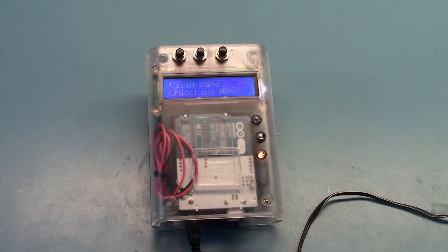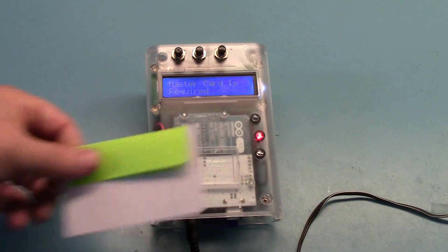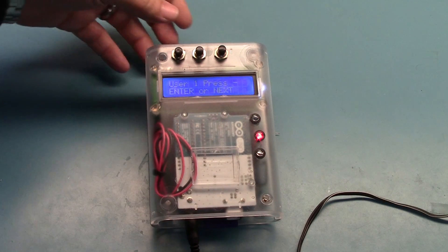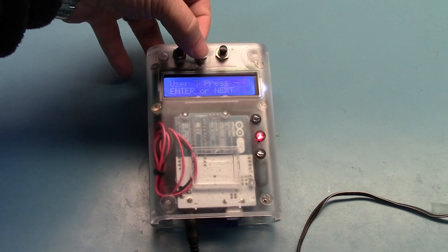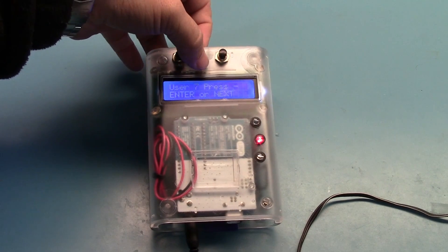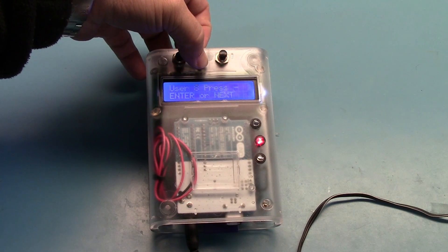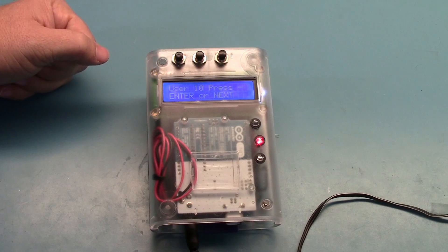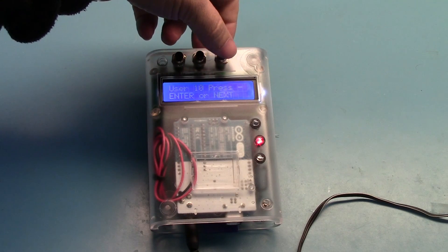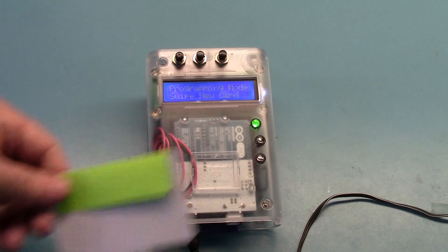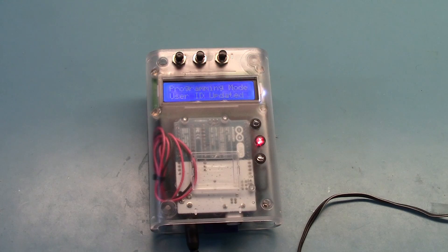Another nice feature when we're in programming mode is after we've swiped in and we're prompted to select a user, we can press the user button to get to the next one, or we can hold it down and it will scroll through the different users. And we simply stop holding it wherever we want to, whatever user we want to use. Press enter. Prompts us to swipe a card. And then updates the interface.